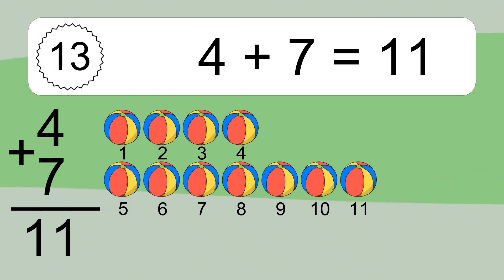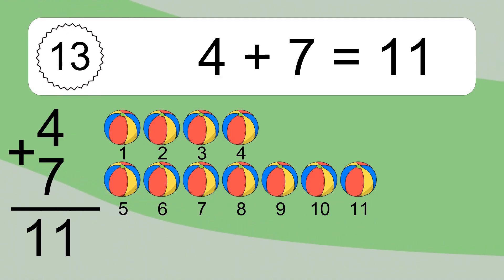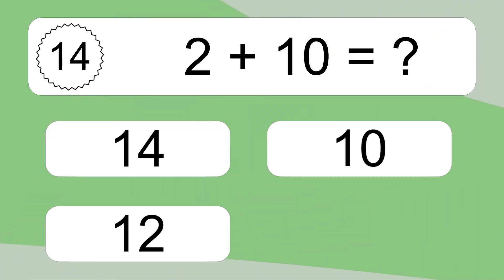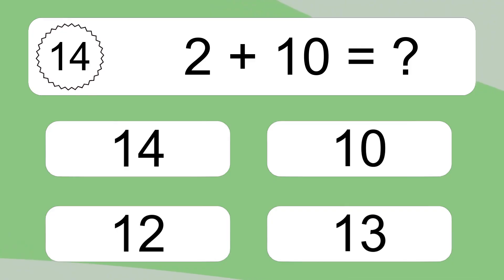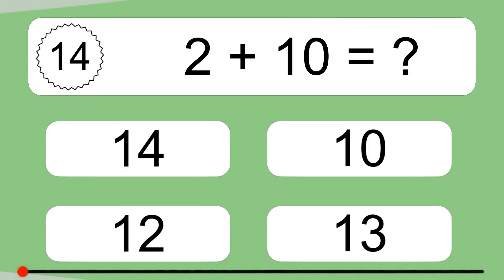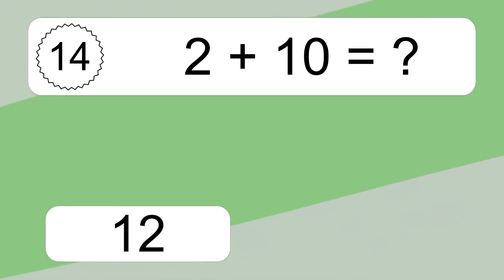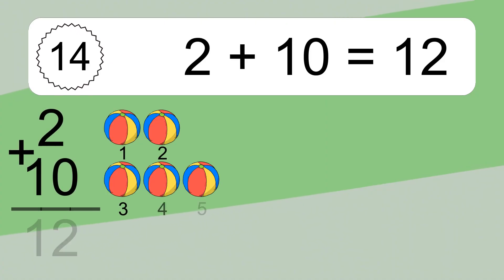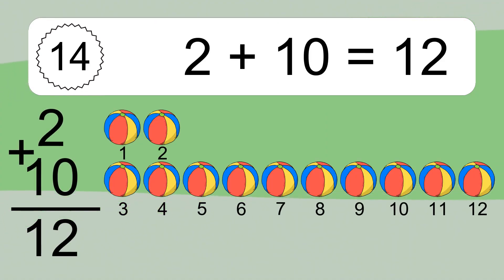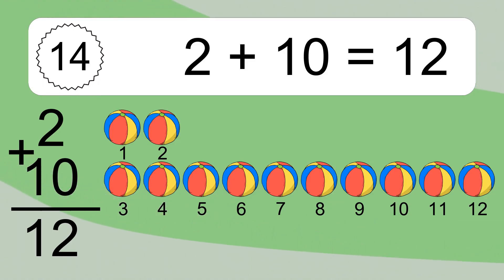Four plus seven equals what? Let's count it: one, two, three, four, five, six, seven, eight, nine, ten, eleven, twelve.